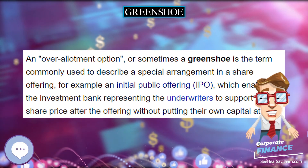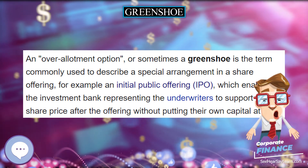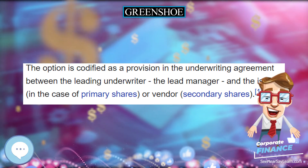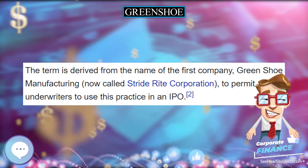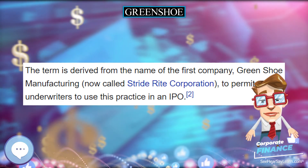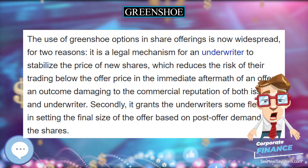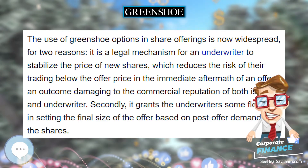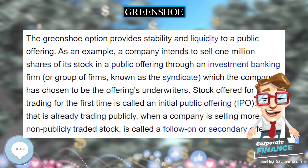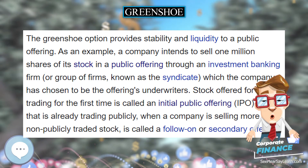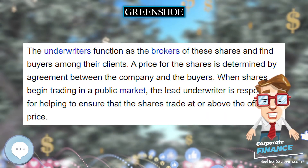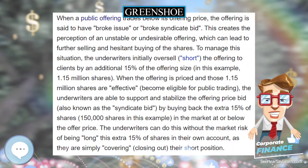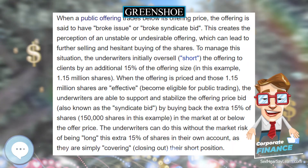If the underwriters are able to buy back all oversold shares at or below the offering price, they would not need to exercise any portion of their green shoe option. If they can buy back only some shares at or below the offer price because the stock eventually rises higher, they would exercise a portion of the green shoe option to cover their remaining short position. If the stock immediately rises and stays up, they would exercise 100% of their green shoe option.